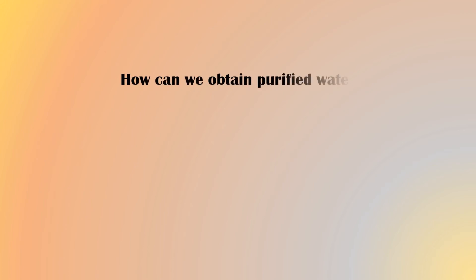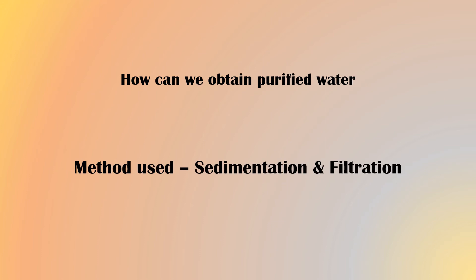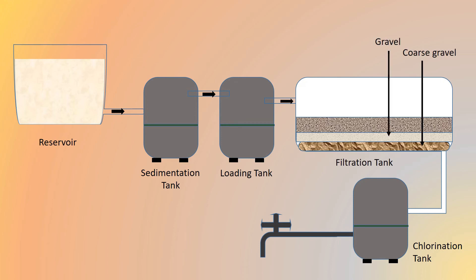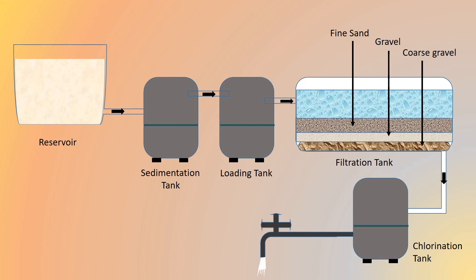Now we will see how to obtain purified water using sedimentation and filtration. Wastewater in a reservoir goes to a sedimentation tank where solids settle down below. Next it goes to a loading tank where suspended impurities sediment out. Then it passes to a filtration tank and finally to a chlorination tank, where chlorine kills the bacteria. Finally, purified water is obtained from the tap.